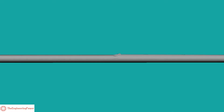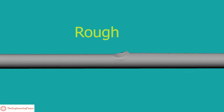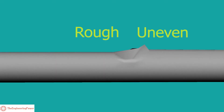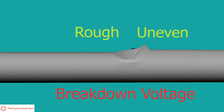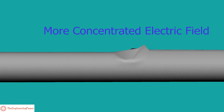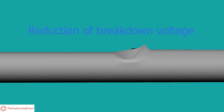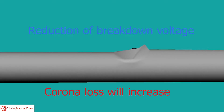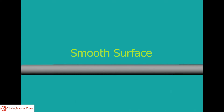If the surface of the conductor is rough and uneven, it will decrease the value of the breakdown voltage, as the electric field will be more concentrated at rough spots. With the reduction of breakdown voltage, the corona loss will increase. On the other hand, corona loss will be less in conductors having a smooth surface and hence a uniform electric field.